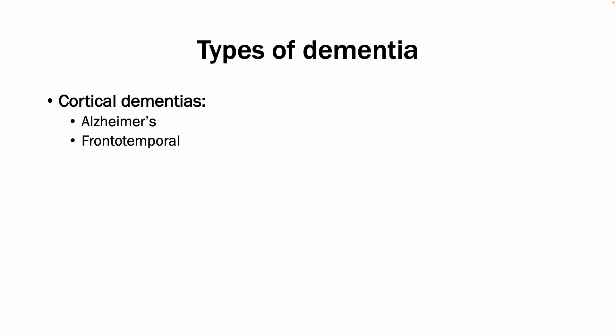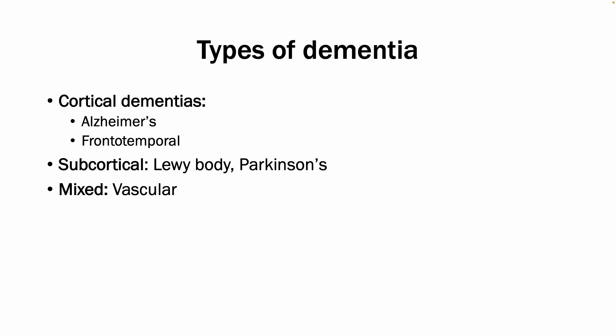In terms of the types of dementia, it is important to know that there are cortical dementias, which affect the cortex, such as Alzheimer's and frontotemporal dementias. You can have subcortical dementias, such as Lewy body dementia or Parkinson's, which affect the basal ganglia and the thalamus. And lastly, you can also have mixed dementias, which include vascular dementia and infectious dementia.